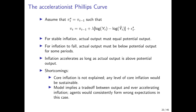The shortcoming of this formulation is that core inflation itself is not explained. Any level of core inflation would be sustainable as long as actual output equals potential output, and it is not really anchored. The model implies a trade-off between output and ever-accelerating inflation. Agents would consistently form wrong expectations, always expecting last period's inflation, even though output is persistently above potential. Rational individuals would at some point recognize that policymakers consistently try to raise output above potential and adjust their expectations accordingly.